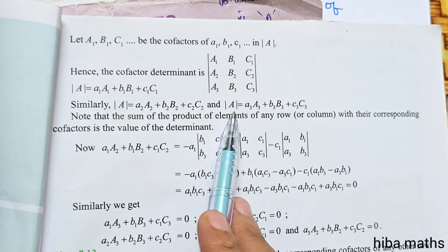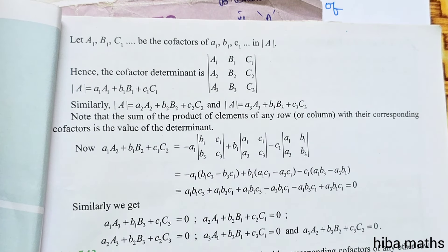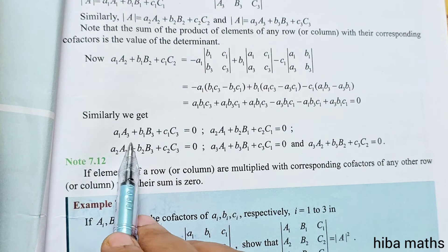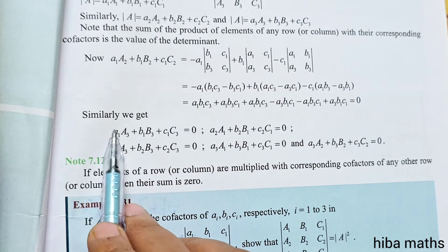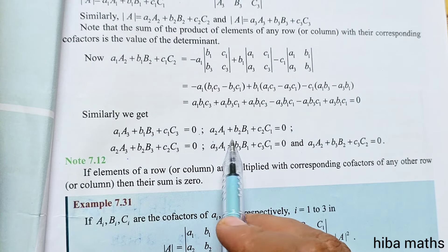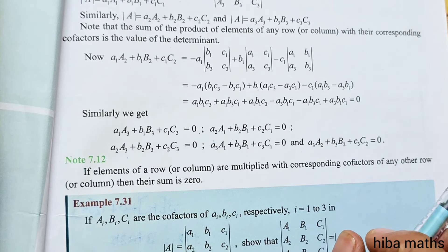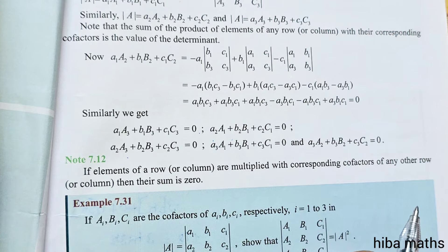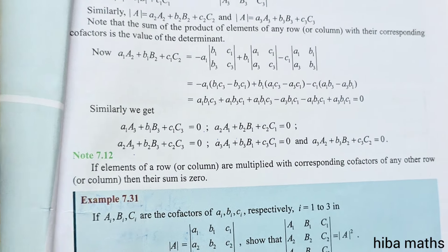Using cofactor properties, we know that the sum of products equals zero for non-matching indices. So 2,3 is 0, 2,1 is 0, 3,1 is 0, 3,2 is 0. Now we have to solve this sum, so let's understand the first step.